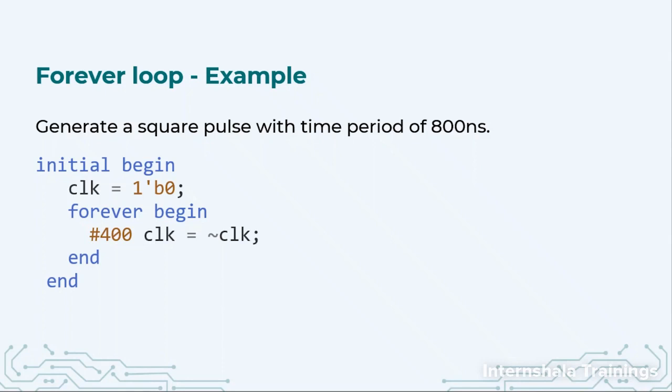After the next 400 nanoseconds, 1 will become 0, then again 0 will become 1, and this way it will always keep on going. So after every 800 nanoseconds the value will be back to the original value, and we will have a clock of 800 nanoseconds.